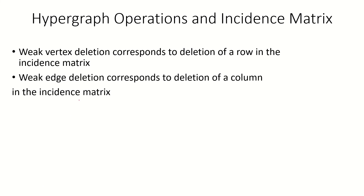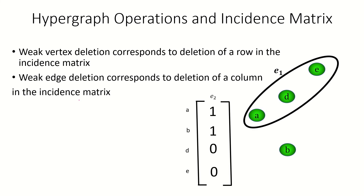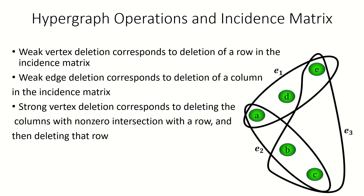Next, let's look at strong vertex deletion. To demonstrate, let's strongly delete vertex c from this hypergraph — that means we need to weakly delete the edges incident to c and weakly delete c. Here's the incidence matrix of the result. Notice that it could be formed from the original incidence matrix by finding the columns that have a 1 in their intersection with the row corresponding to c, deleting those columns, and then deleting the row that corresponds to c. That's the effect strong vertex deletion has on the incidence matrix.